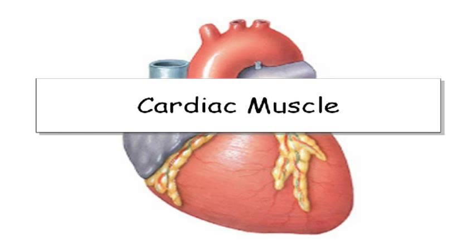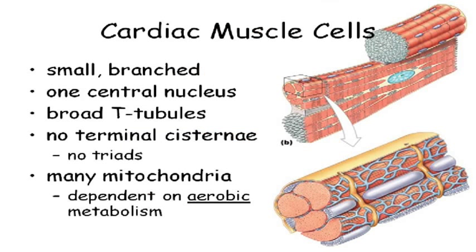We've been talking about skeletal muscle — muscle that's attached to bone and sometimes to skin. Now, remember there are two other types of muscle tissue. Cardiac muscle cells are striated like skeletal muscle cells, so they have the A-bands and the I-bands, the myofibrils and all that business.